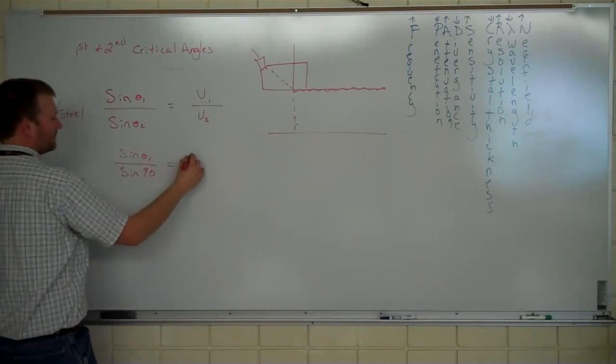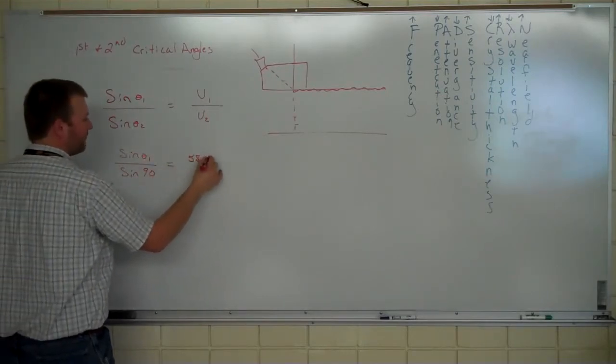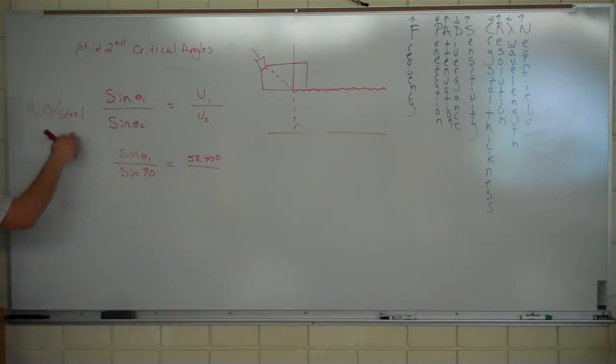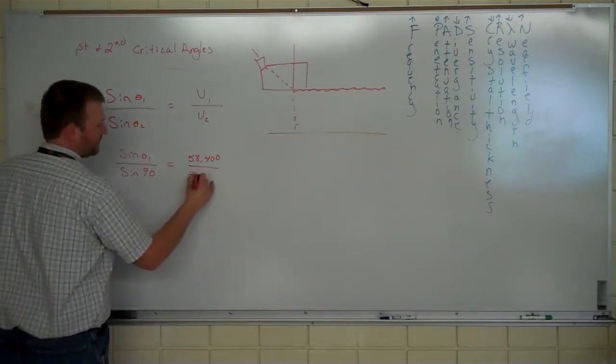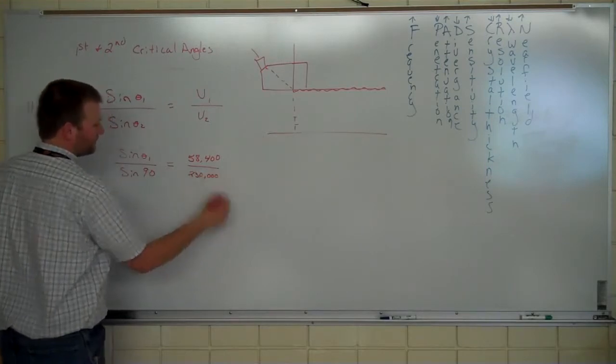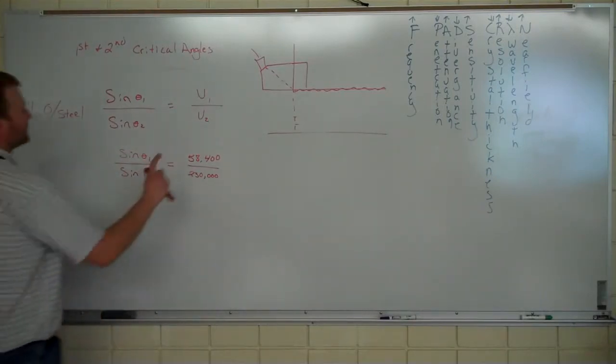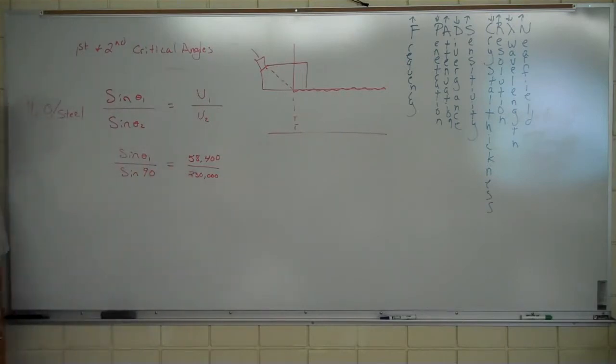Compressional velocity, 58,400, correct? Write out for your sheet, inches per second. Compressional velocity of steel, 230,000, right? We only want compressional first because we want to know where the longitudinal velocity, or sorry, where the longitudinal wave is refracted out.